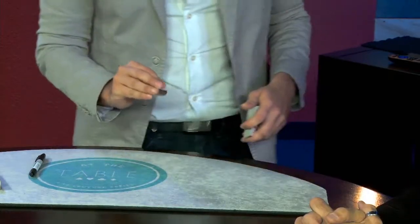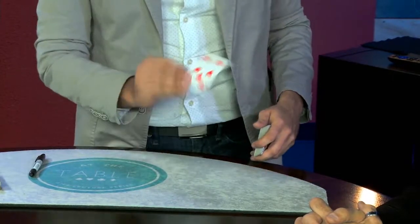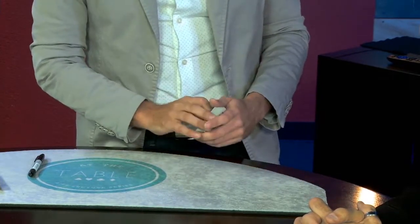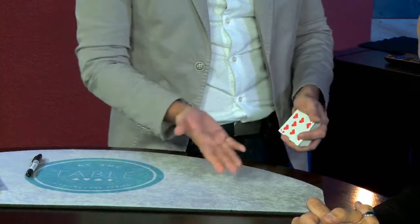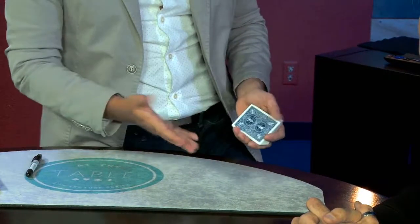So that seven of hearts keeps rising to the top because seven up, you know? But Greg, there's a way we can trick the card. I put it in the center. Seven up. That card goes to the top. You've seen that already. But there's a way we can trick the card.